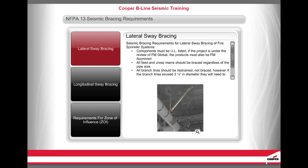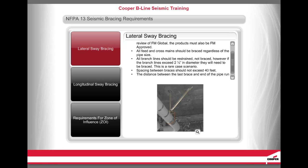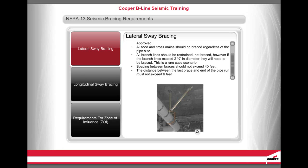Seismic bracing requirements for lateral sway bracing of fire sprinkler systems: Components must be UL listed. If the project is under the review of FM Global, the products must also be FM approved. All feed and cross mains should be braced regardless of the pipe size. All branch lines should be restrained, not braced. However, if the branch lines exceed 2.5 inches in diameter, they will need to be braced — this is a rare case scenario. Spacing between braces should not exceed 40 feet.